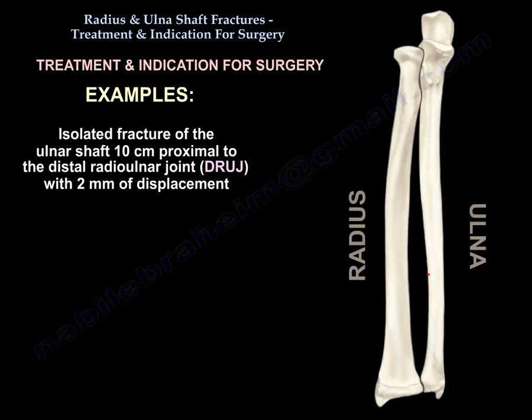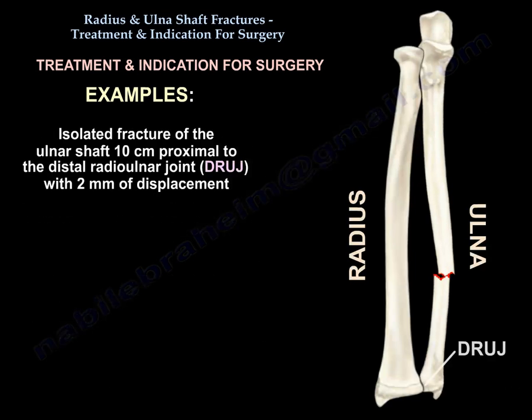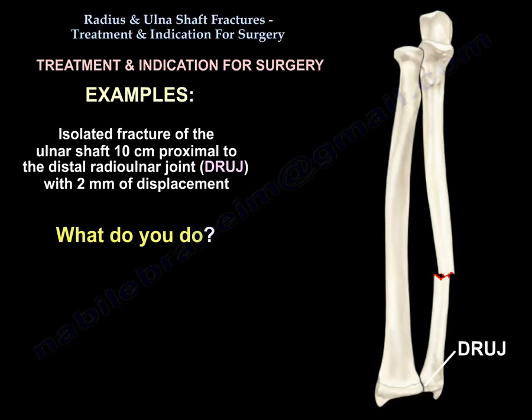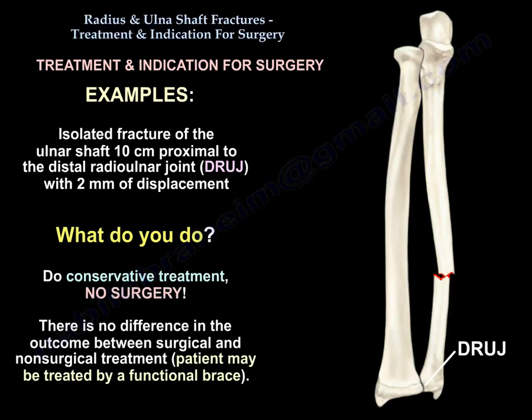Isolated fracture of the ulnar shaft, 10 cm proximal to the distal radio-ulnar joint with 2 mm displacement — what do you do? You will do conservative treatment; no surgery. There is no difference in outcome between surgical and non-surgical treatment. The patient may be treated with a functional brace.